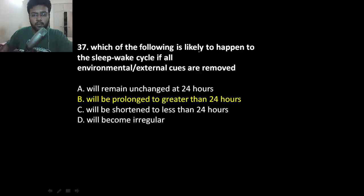Which of the following is likely to happen in the sleep-wake cycle if environmental or external cues are removed? In the hypothalamus, there is one nucleus called suprachiasmatic nucleus that receives input from the retina and sends it to the pineal gland and regulates melatonin secretion. That means suprachiasmatic nucleus maintains the circadian rhythm based on retinal input.